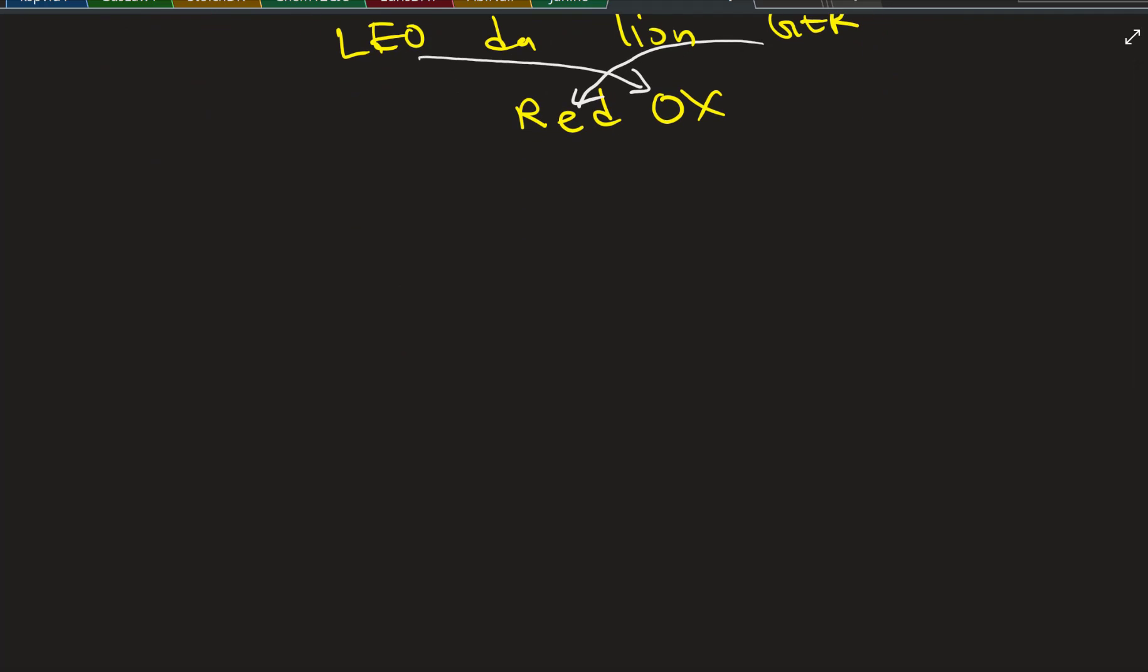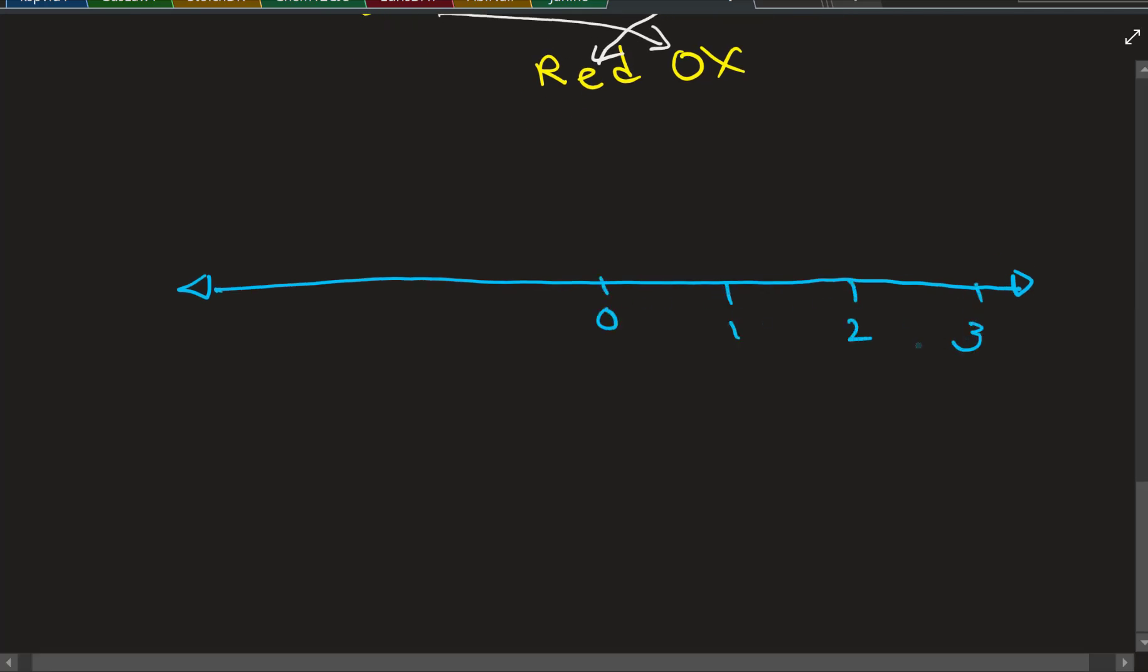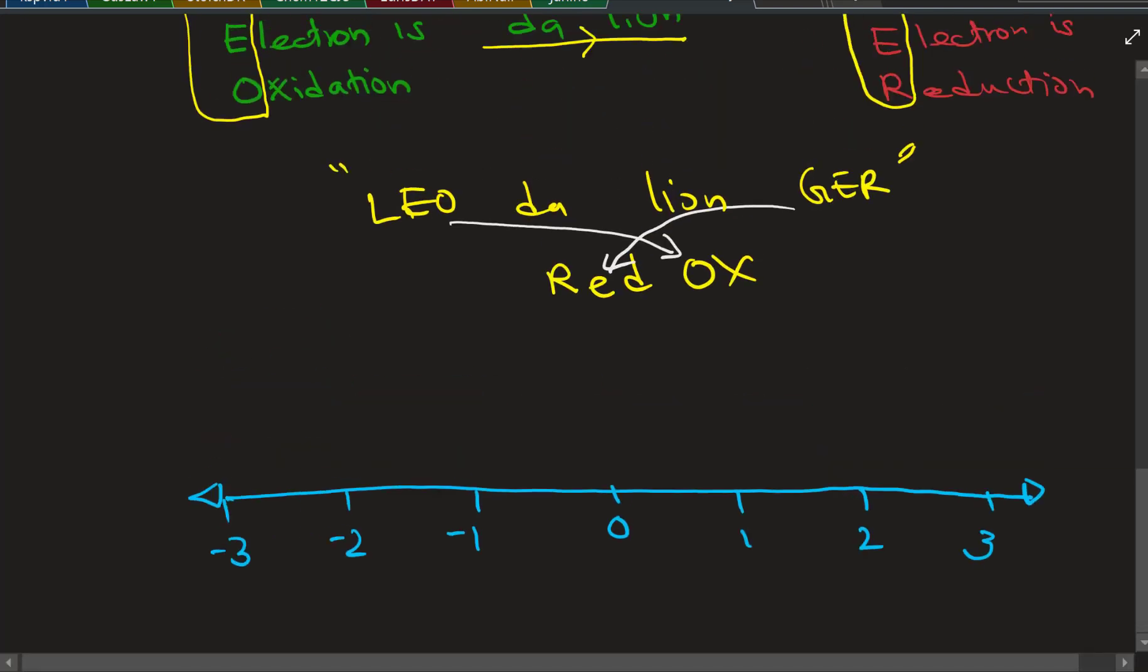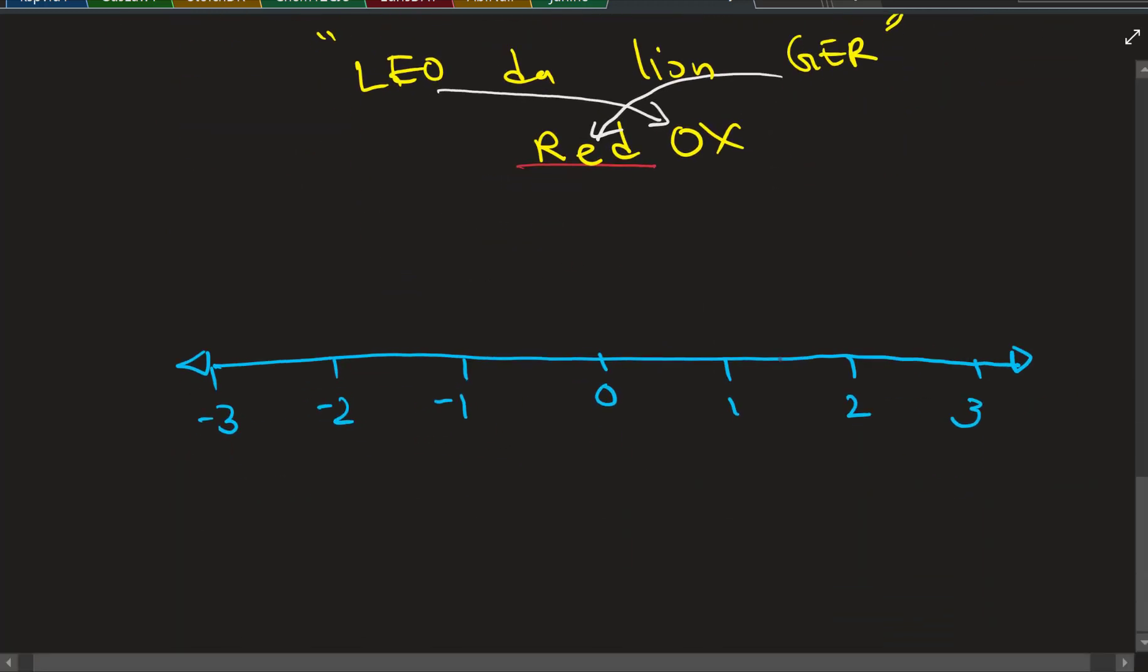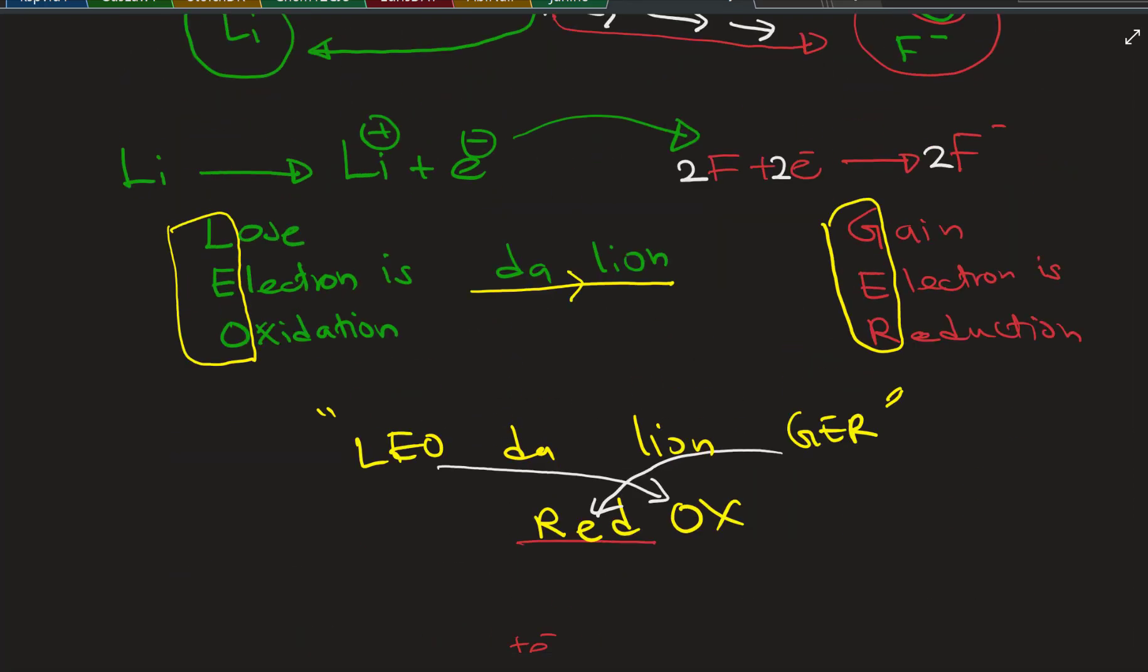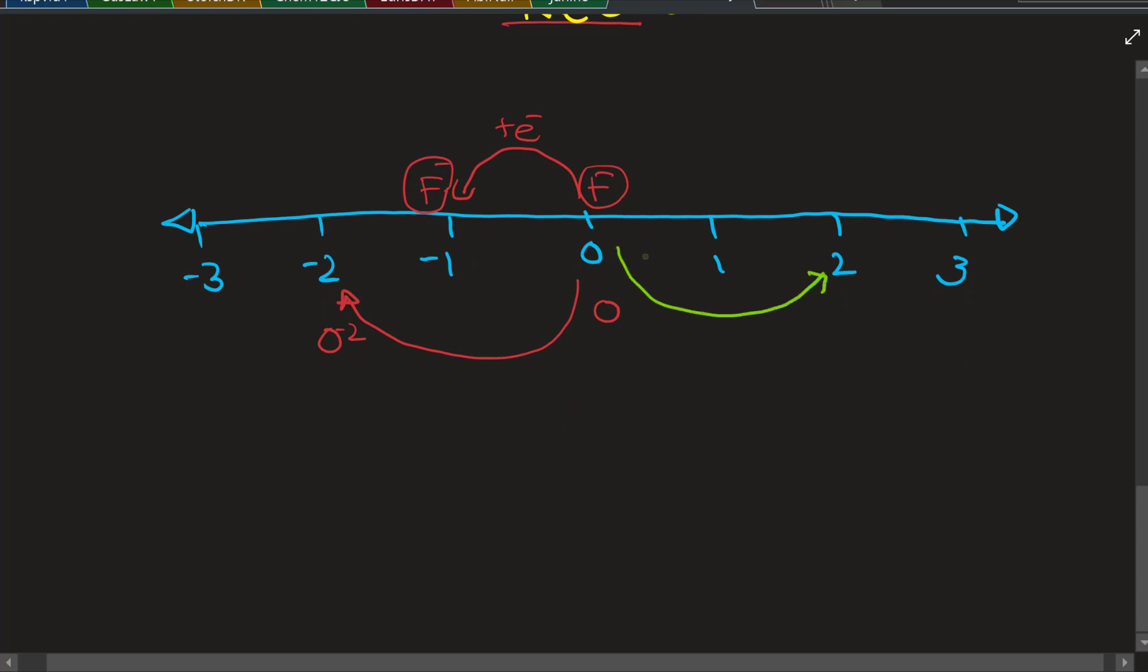There's another way you can understand this using oxidation numbers. Think of it like the number line, starting with minus three to plus three. If you gain an electron to a fluorine atom, it becomes fluoride, that's minus. If you give two electrons to the oxygen atom, it becomes O2 minus oxide. These are popular reactions we use all the time in questions. Calcium kicks out two electrons and becomes calcium 2+.